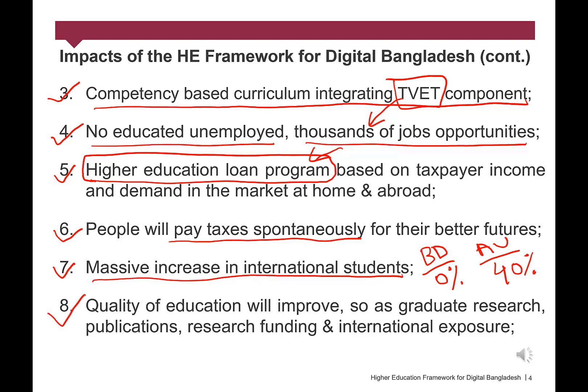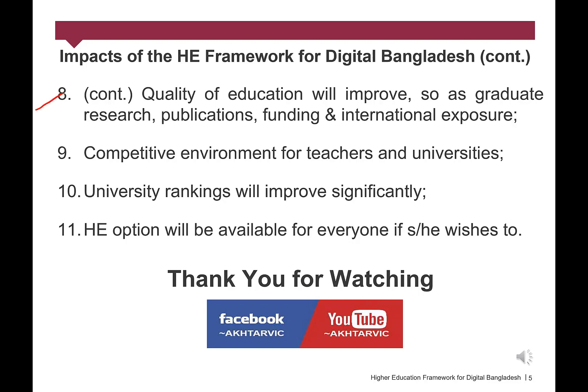Number 8: Quality of Education will improve, so as graduate research, publications, research funding and international exposure. Alongside international student population, graduate education and research is another area which we need to improve. When the universities will have income, they can bring visiting professors and scholars from abroad, particularly those of Bangladeshi origin having academic excellence in both teaching and research in various fields. It will improve our graduate education and research, also quality of publications and international exposures. Research funding on key areas of interest needs to be introduced as grants nationally.